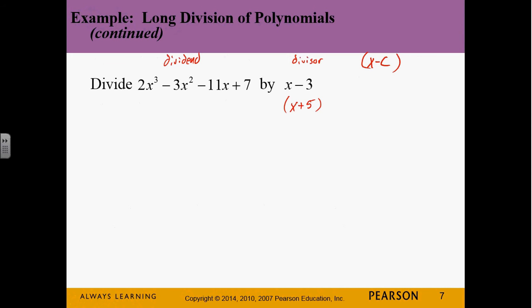It's real important that we recognize that c is always going to be the opposite sign. If I'm given c and I want to write that, I just change it over to the opposite sign. So if I was given c equals 3, I would say that's x minus 3. Or if I was given c equals negative 2, I would say that's x plus 2 because it's always x minus c, whatever c is.